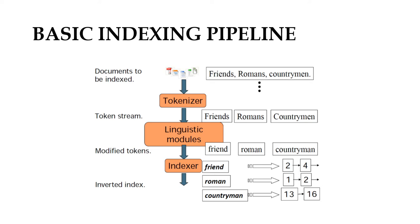Each individual token is now passed on to the next stage called linguistic models. The linguistic model gives you normalized tokens. For example, the token friends will be normalized to friend, Romans will be normalized to Roman, and countrymen will be normalized to countrymen. These normalized tokens are then given as input to the indexer, which processes them using an inverted index.